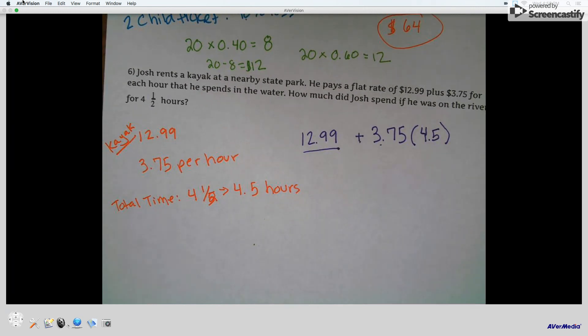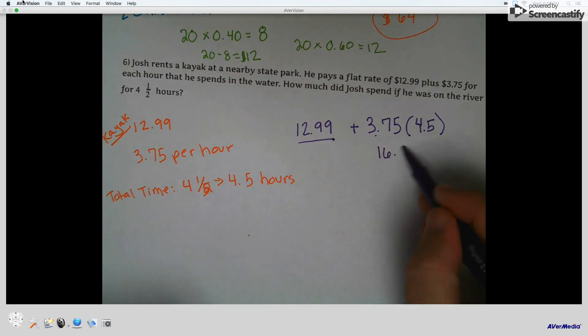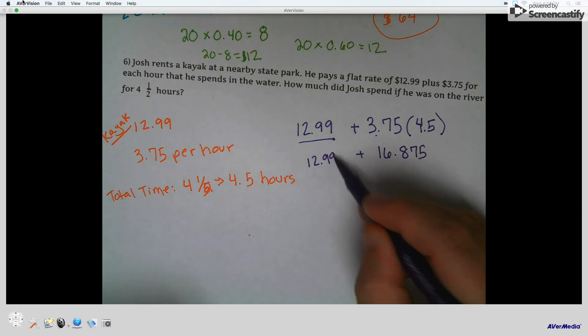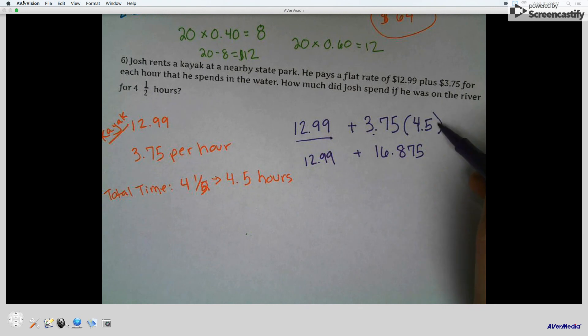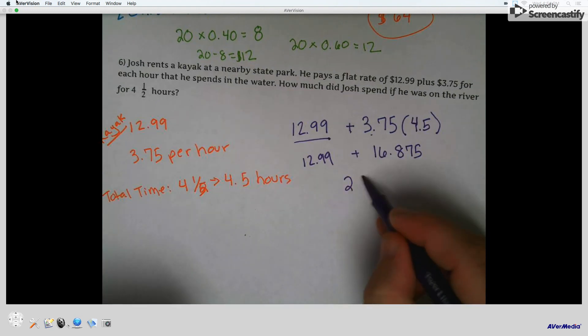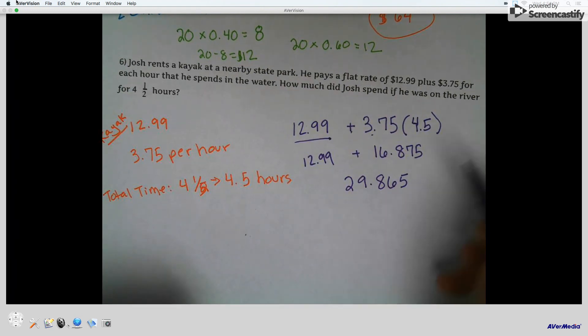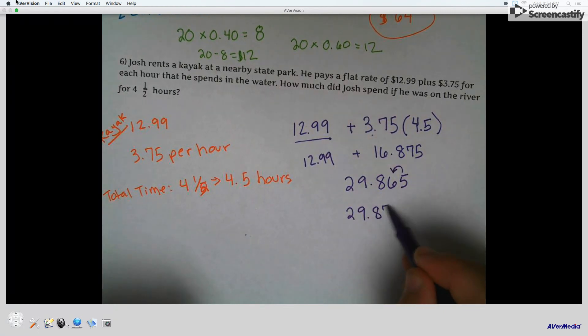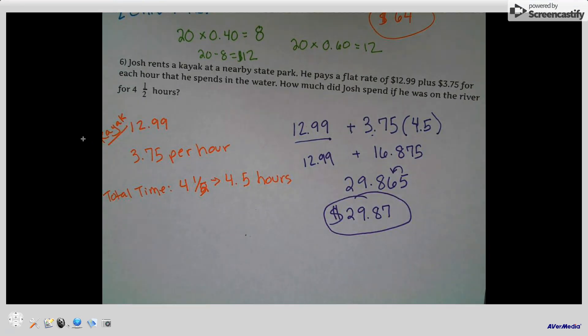So you take $12.99 plus $3.75 times 4.5. And $3.75 times 4.5, so that's how many hours he was, is $16.875. Because it's $3.75 per hour, there's 4.5 hours. And when you add that to $12.99, you get $29.865. And don't forget to round that last digit. So that's how much Josh had to pay for his kayak adventure.